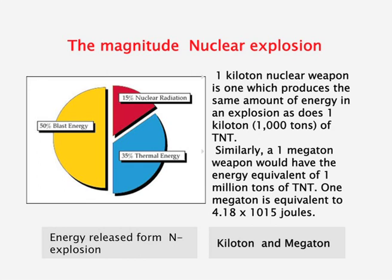Explosive yield is measured in kilotons and megatons. A kiloton nuclear weapon produces the equivalent of 1,000 tons of TNT, while a megaton weapon equals one million kilotons of TNT. The energy release is so mammoth — as Oppenheimer noted at the very first test — it is a cosmic kind of devastation.